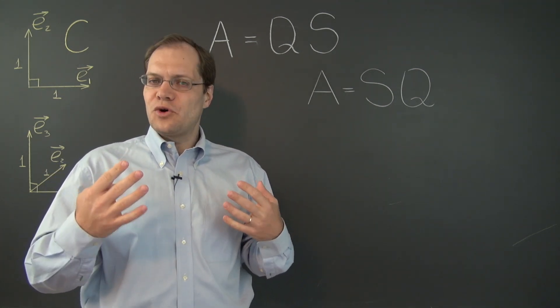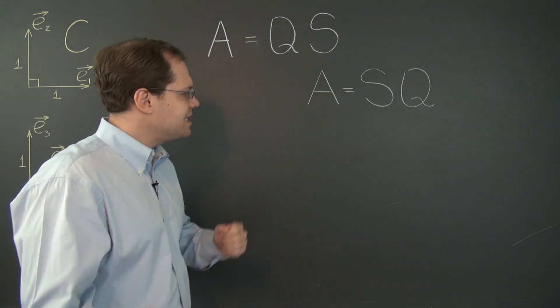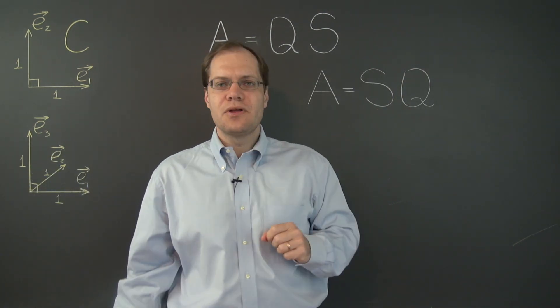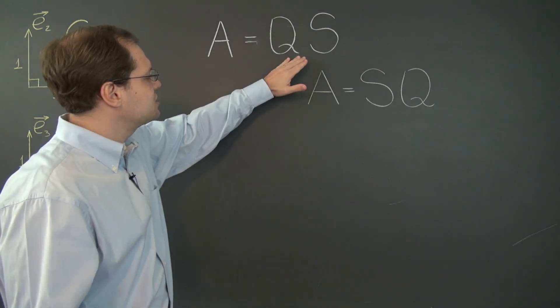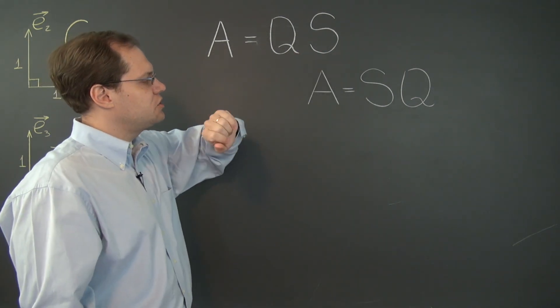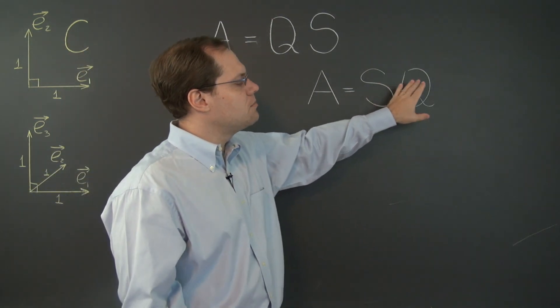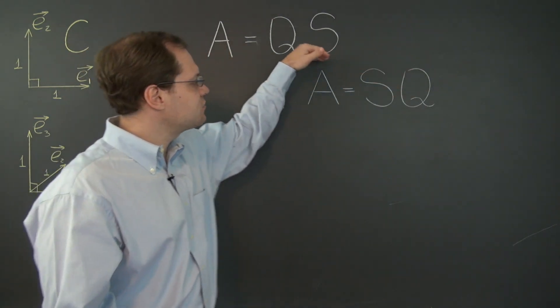But the answer is of course yes. And to obtain these matrices S and Q we have to repeat the same logic that we followed when we were just trying to discover these two matrices Q and S. These of course will most likely be different matrices from these.